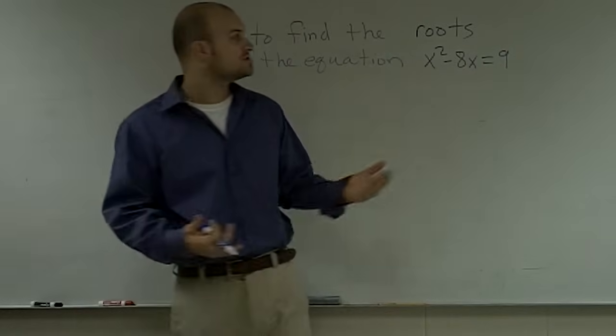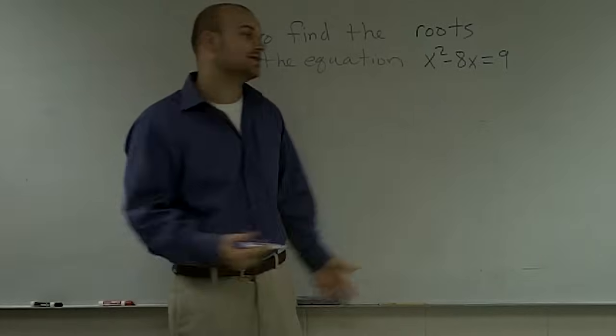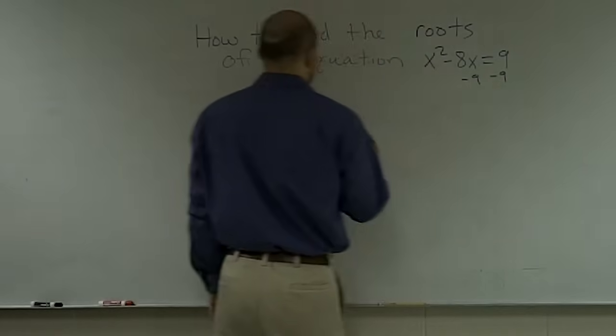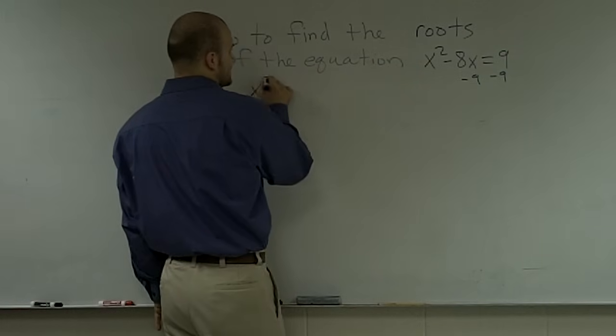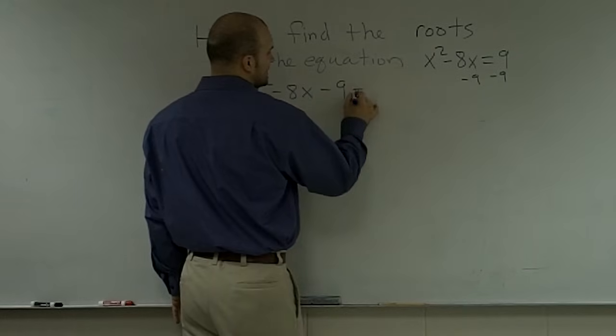Because remember, when solving for your roots, the roots are the same thing as your x-intercepts. Therefore, you need to have that set equal to 0. So what I'm going to do is subtract the 9 from both sides. And therefore, what I obtain now is x squared minus 8x minus 9 equals 0.